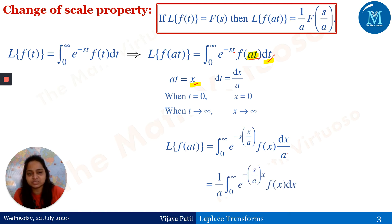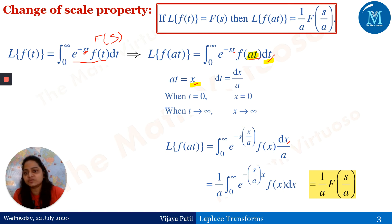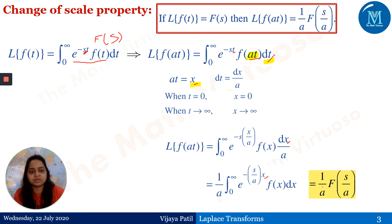Since 1/a is a constant with respect to x, and the integration is now with respect to x, it becomes (1/a) times the integral from 0 to infinity of e^(−(s/a)·x) f(x) dx. But by the definition of the Laplace transform — the integral of e^(−st) f(t) dt equals F(s) — here s/a plays the role of s, and therefore this equals (1/a) · F(s/a).